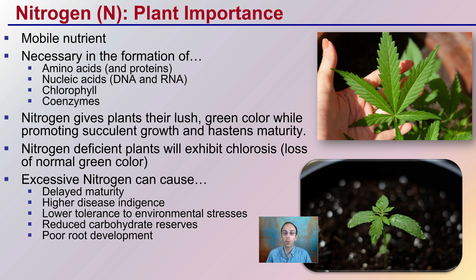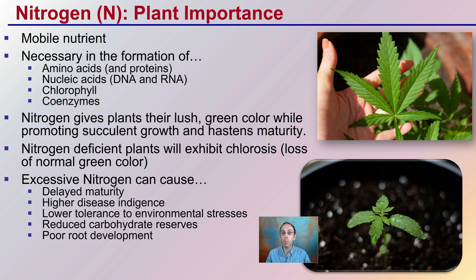Nitrogen gives plants that lush green color while promoting succulent growth and hastening maturity — giving that plant what we as growers determine as a healthy green color. Deficient plants exhibit what we call chlorosis, which is loss of normal green color or yellowing of the leaves. Excessive nitrogen can cause delayed maturity, higher disease issues, lower tolerance for environmental stresses, reduced carbohydrate reserves, poor root development, and difficulty to clone — not to mention costs.